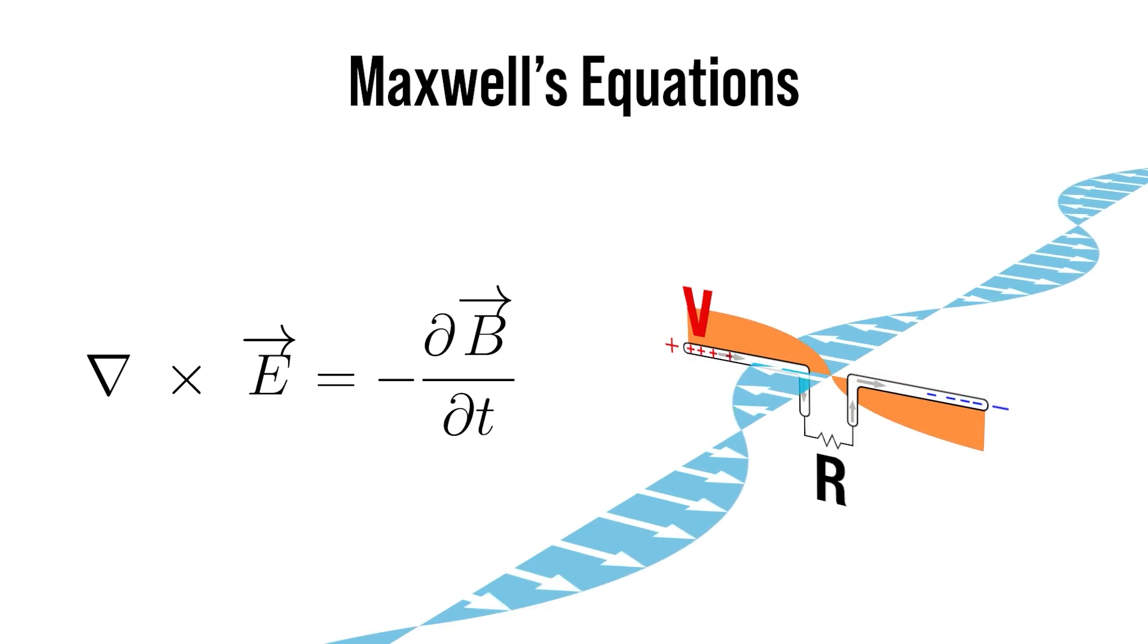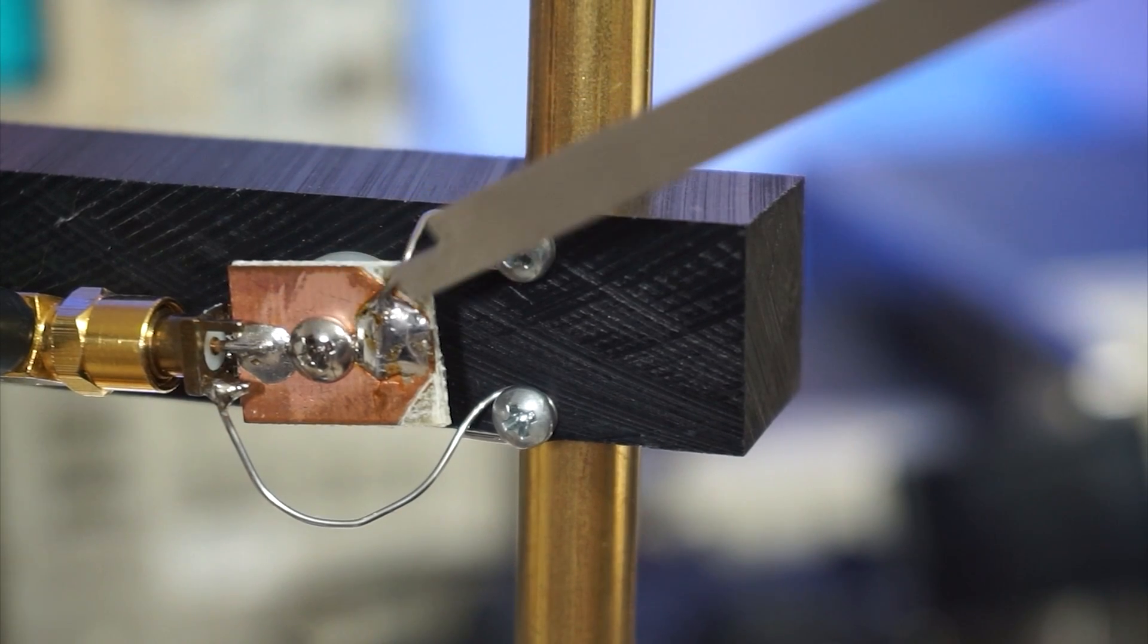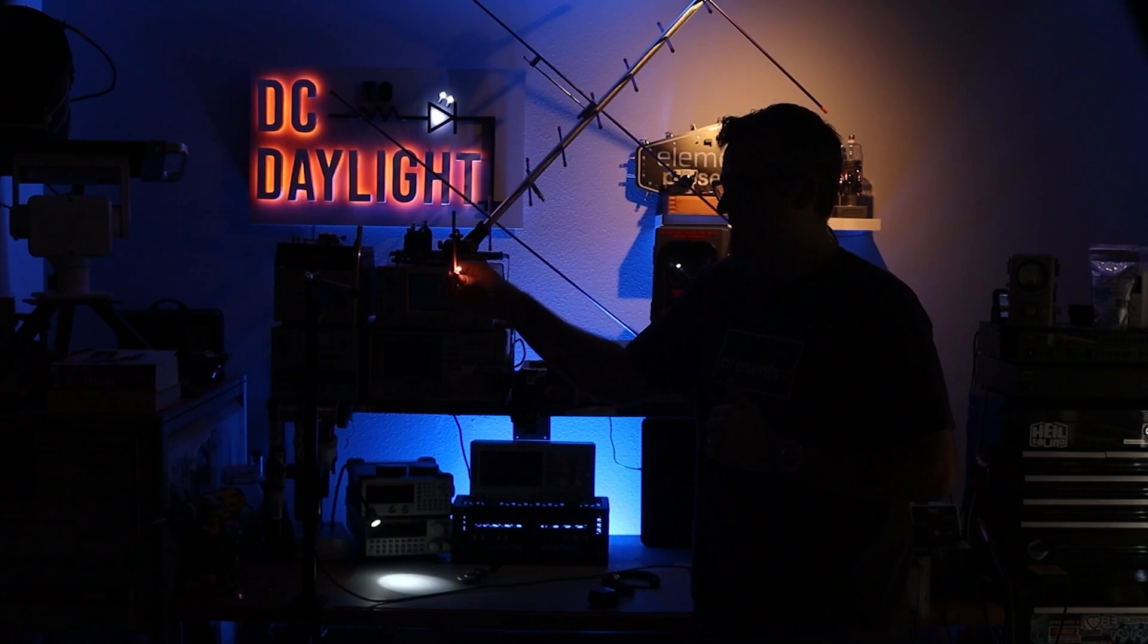Hello and welcome back to DC to Daylight. My name is Derek and in the last couple of videos we were focused mainly on antenna theory and some design considerations for a simple dipole which had an omnidirectional radiation pattern. Theoretically that allows us to talk to folks within a certain radius around our location.